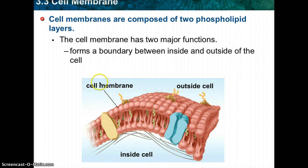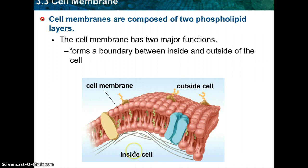The composition of nearly all cell membranes is a double-layered sheet called the lipid bilayer. As you can see here, there are two layers of lipids — hence the name bilayer. Here's one layer of lipids, and here's the second layer. The lipid bilayer gives cell membranes a flexible structure that forms a strong barrier between the cell and its surroundings.